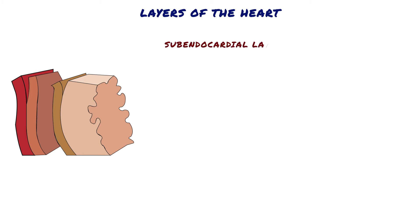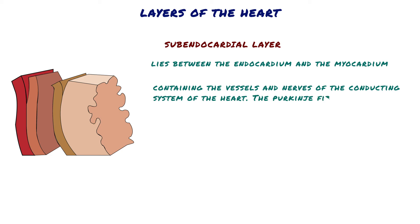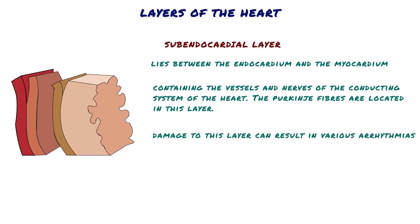Subendocardial Layer. The subendocardial layer lies between the endocardium and the myocardium. It consists of a layer of loose fibrous tissue containing the vessels and nerves of the conducting system of the heart. The Purkinje fibers are located in this layer. As the subendocardial layer houses the conducting system of the heart, damage to this layer can result in various arrhythmias.